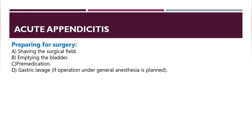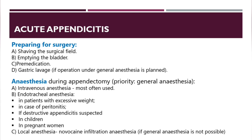Pre-operative preparation includes shaving the surgical field, emptying the urinary bladder, pre-medication, and gastric lavage if general anesthesia is planned. General anesthesia — most commonly intravenous — is used for appendectomy. Endotracheal anesthesia is used in patients with excessive weight, peritonitis, suspected destructive appendicitis, in children, and in pregnant women. Local anesthesia (novocaine infiltration) is used if general anesthesia is not possible.